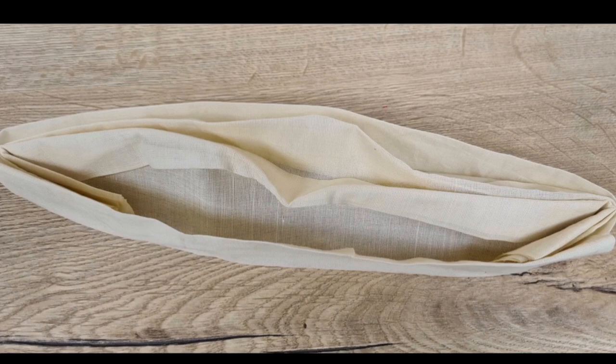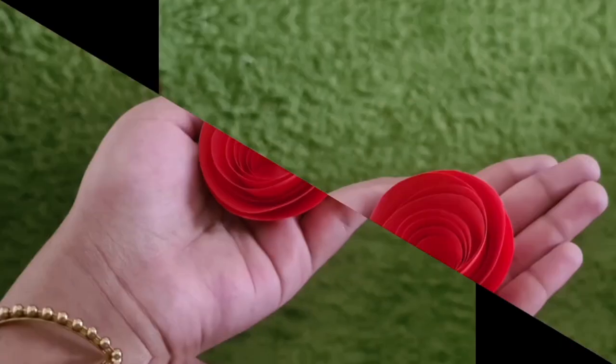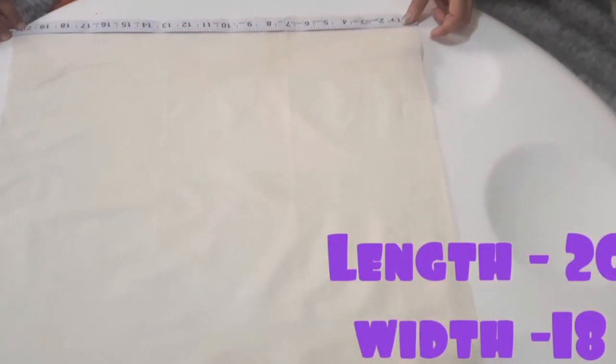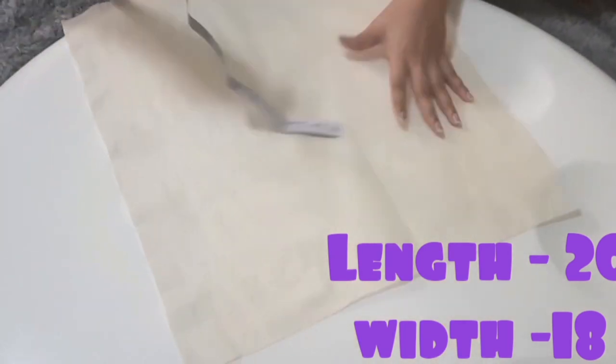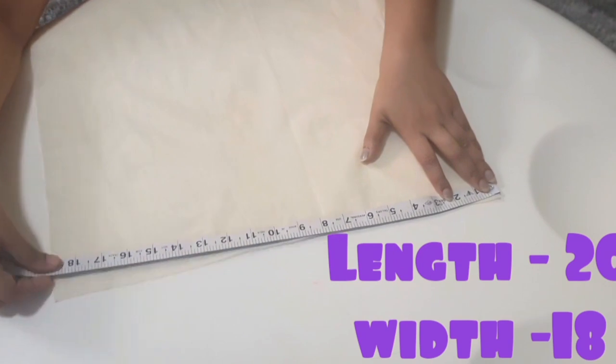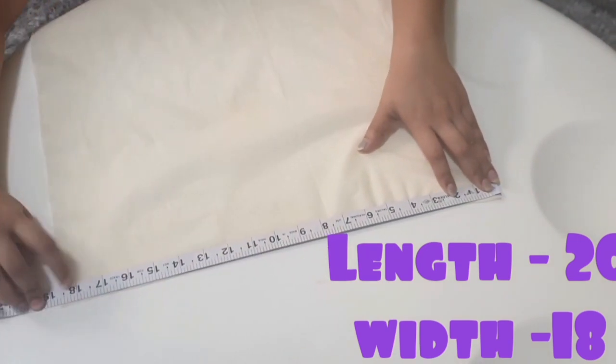Hi guys, welcome to Danu's Diaries. So today we have come with a video on how to make Nehru cap and a rose. Let's see how to make them. First, take a piece of cloth and measure the length as 20 and width as 18.